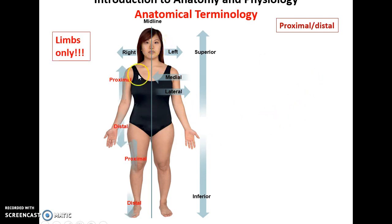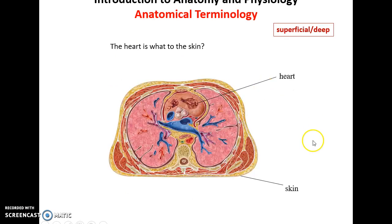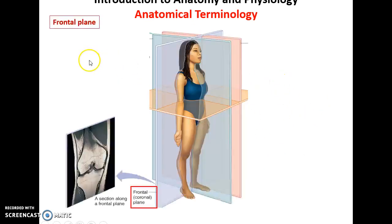For the limbs only, proximal and distal replace superior and inferior — the elbow is proximal to the wrist. Superficial and deep often involve layers surrounding other structures — the heart is deep to the skin.